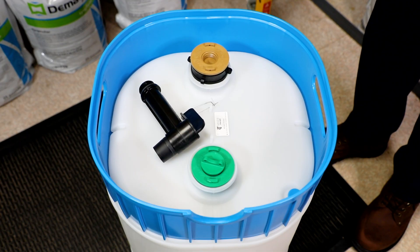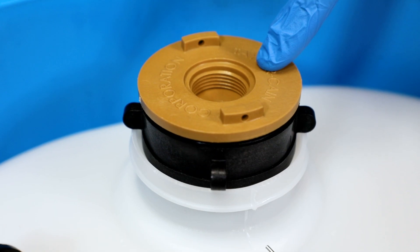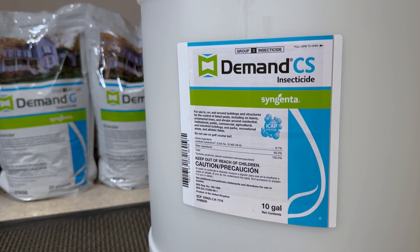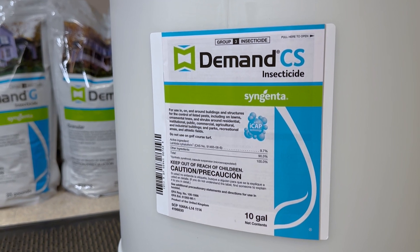The Demand CS Drum comes with two openings, one for mixing and one for dispensing. The mixing opening contains an impeller inside the drum, eliminating the need for an electric pump. Always read the label before mixing and loading the product.